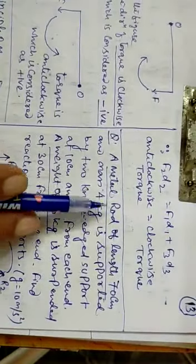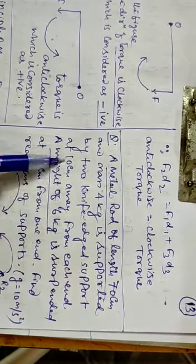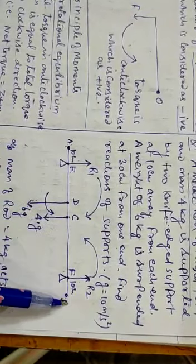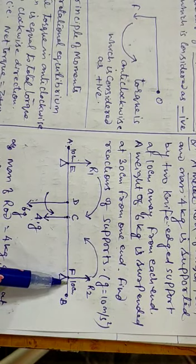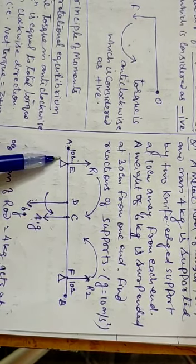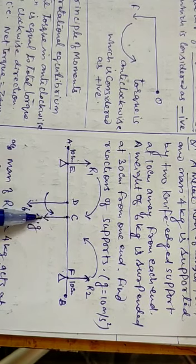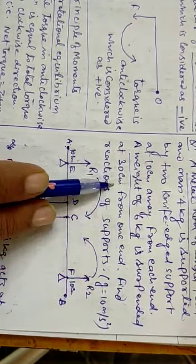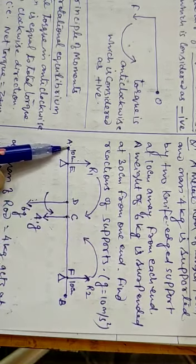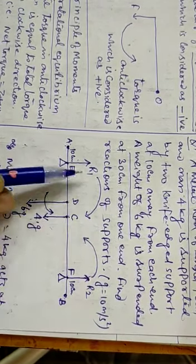Now a numerical problem: A metal rod of length 70 cm, mass 4 kg, is supported by two knife edges at 10 cm from each end. A weight of 6 kg is suspended at 30 cm from one end. Find the reaction of the supports.